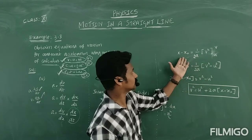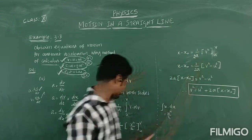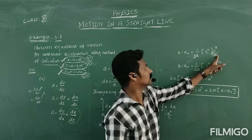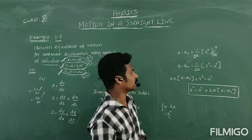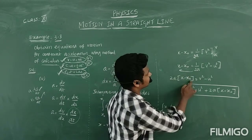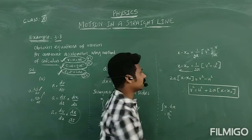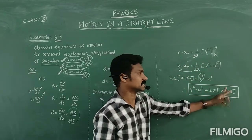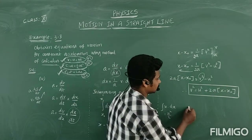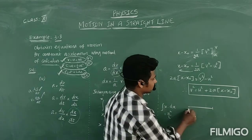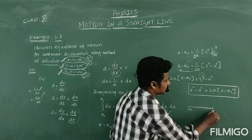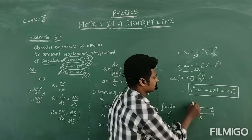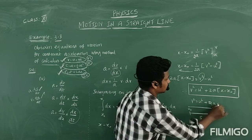So we get: X minus X₀ equals 1 over 2A times (V squared minus U squared). Multiplying both sides by 2A: 2A times (X minus X₀) equals V squared minus U squared. Therefore, V squared equals U squared plus 2A times (X minus X₀). If we denote X minus X₀ as S, then V squared equals U squared plus 2AS.